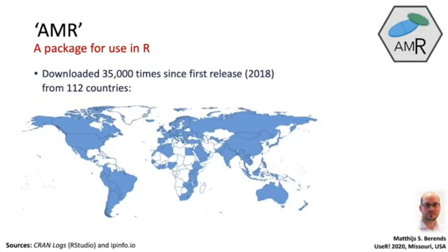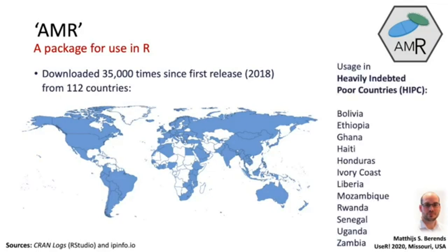We're very happy that it's been downloaded over 35,000 times already since the first release two years ago, based on CRAN logs — which is an underestimation because it only tracks one repository. It's been downloaded from 112 countries already. We are especially fond of the fact that it's being used in HIPCs — heavily indebted poor countries — which do not have a lot of resources. Some organizations in those countries might not even be able to afford SPSS or other statistical software, but they can afford R and our package because it's free. We're very happy that antimicrobial resistance analysis can now be done in any country in the world.